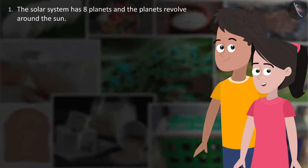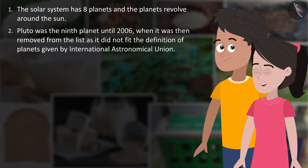We learned that the solar system has eight planets and the planets revolve around the sun. Pluto was the ninth planet until 2006. When it was then removed from the list, as it did not fit the definition of planets given by International Astronomical Union.